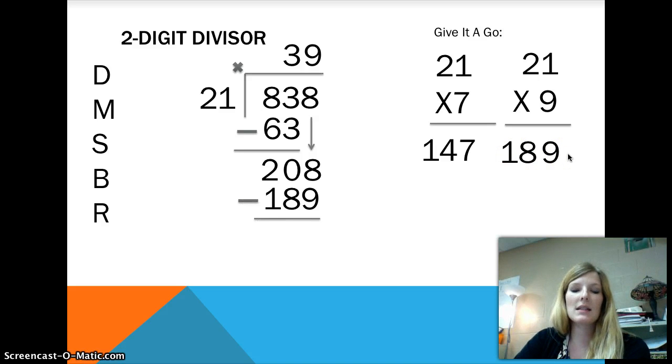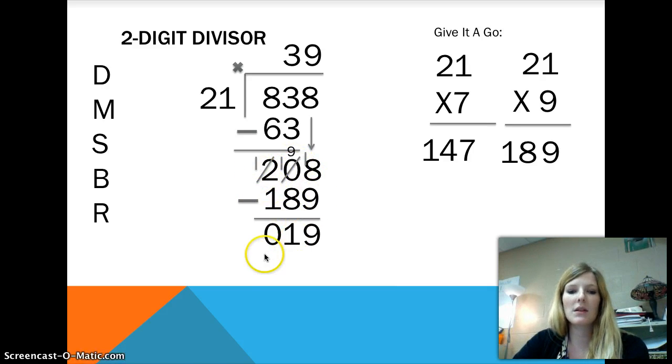Then subtract. I can't do 8 minus 9, so I have to go next door. I have 0. There's nothing to borrow from, so I go again to the 2. 2 becomes a 1. My 10 that I just now borrowed becomes a 9 so that I can make that 8 an 18. Now I can complete my subtraction problem. 18 minus 9 is 9. 9 minus 8 is 1, and then 1 minus 1 is 0. So I'm left with 19. Do I have anything left to bring down? No. So this becomes a remainder. 39, remainder 19.